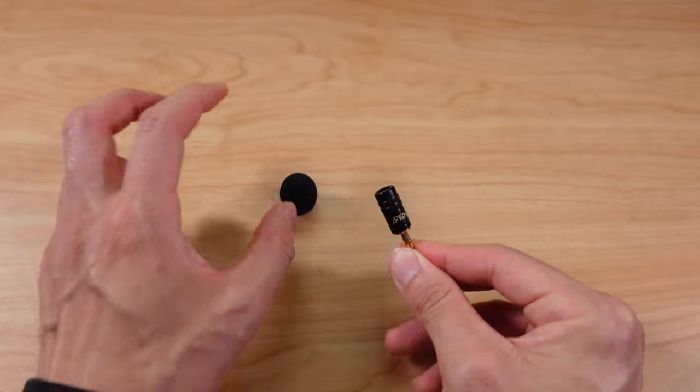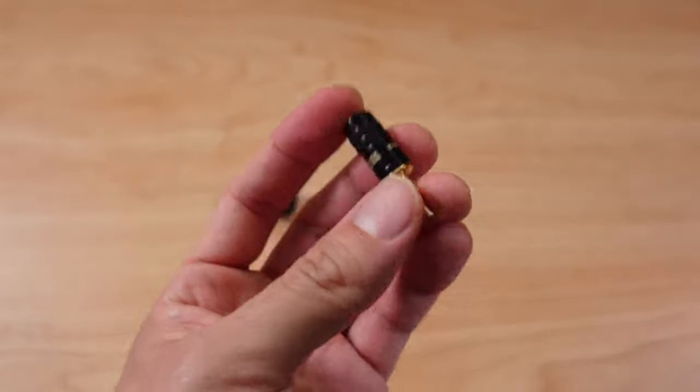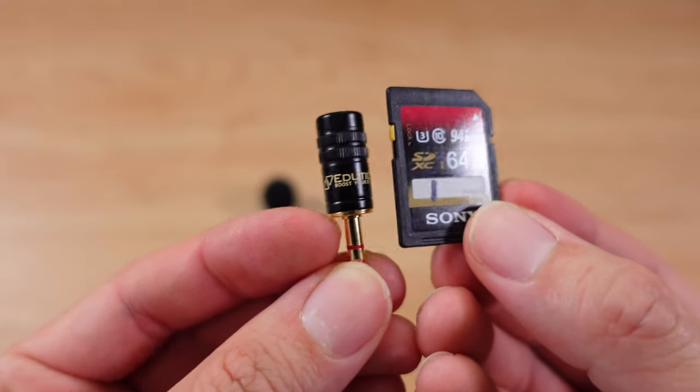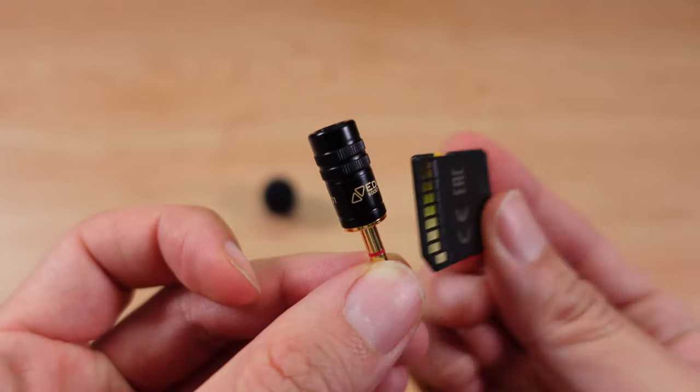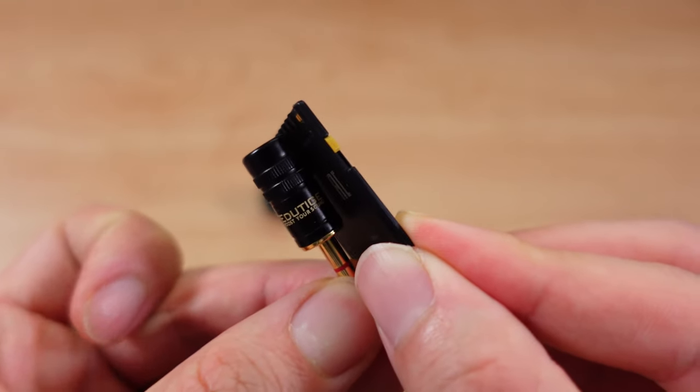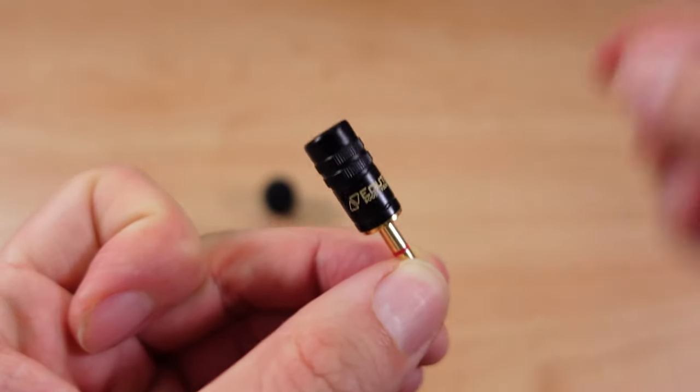It's very small, it looks like a tack. If I compare it to just a regular SD card, here's a normal sized SD card and look at the size to that microphone - incredibly tiny. From what I've read online, the Edutige is a very sensitive microphone.